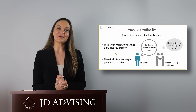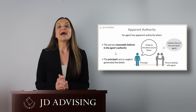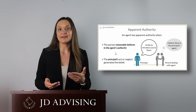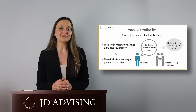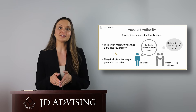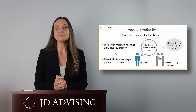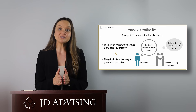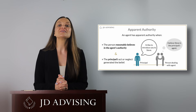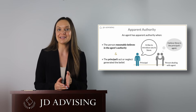There are two elements to apparent authority that you want to memorize. The first element is that the person dealing with the agent has a reasonable belief in the agent's authority. The second element is that that belief was generated by some action or negligence attributable to the principal. Many people forget this second element. Sometimes the facts make it obvious that the principal made clear to the third party that they have an agent working on their behalf, so do not forget to state those facts.